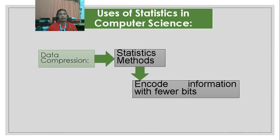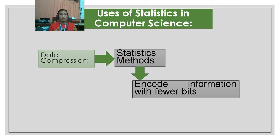Another use of statistics is data compression. Statistical methods are used to compress data by encoding information into fewer bits from the original representation. That is what we call data compression.